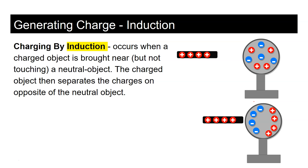Opposite charges attract, so protons want to be near electrons, and electrons want to be away from other electrons and other protons. When a positive rod is brought near a neutral object, it pulls the electrons toward it and pushes the protons to the far side — creating a polarized object with one negative side and one positive side. The positive rod says 'electrons, come mingle; protons, step away' — redistributing the charges.